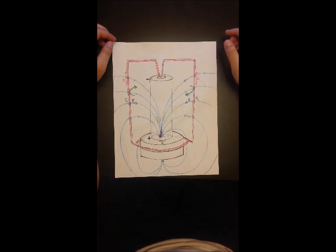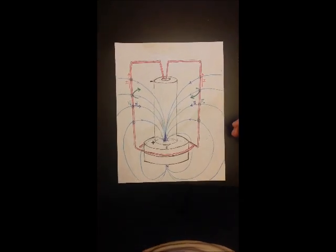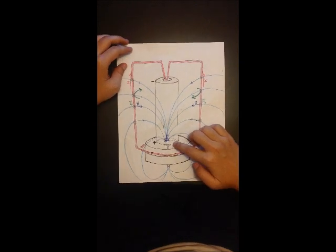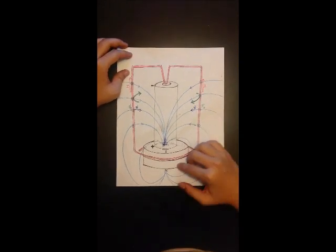We have drawn a diagram that's representative of our actual homopolar motor. As you can see, the positive terminal of the battery is oriented downward, and the north end of the magnets are faced downward as well.